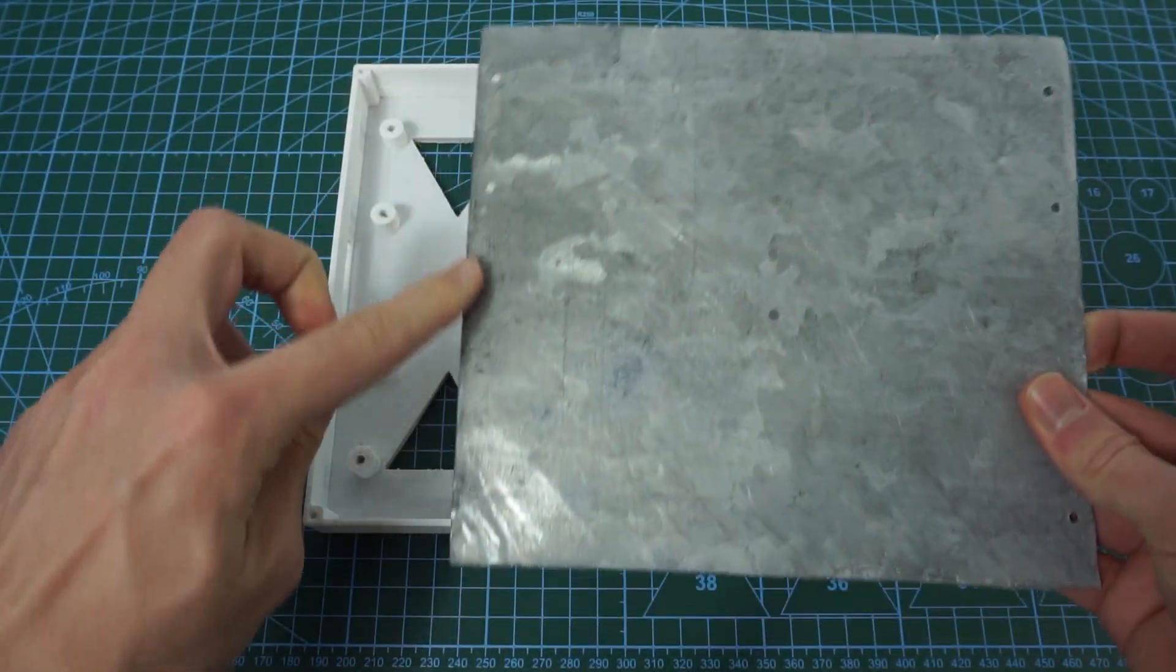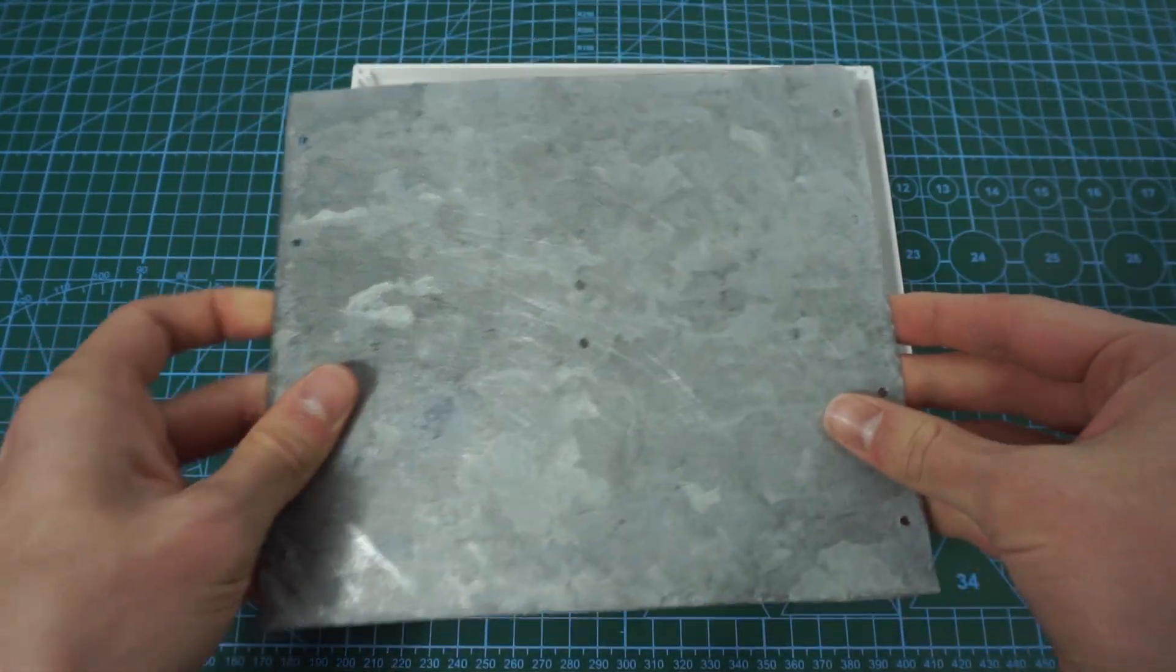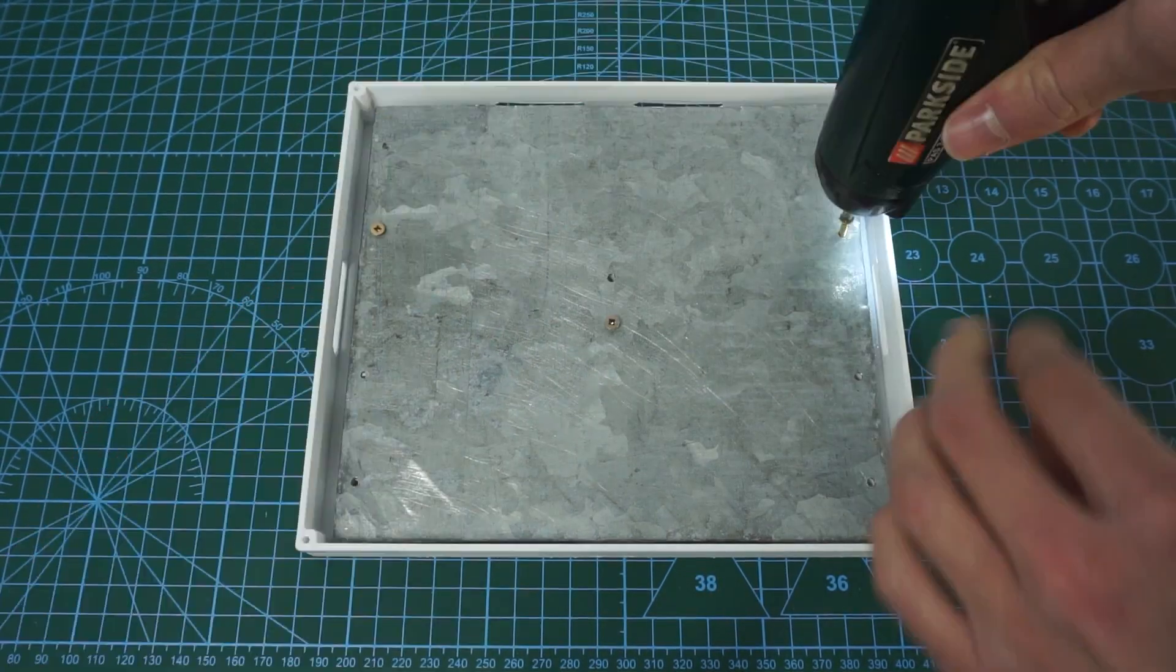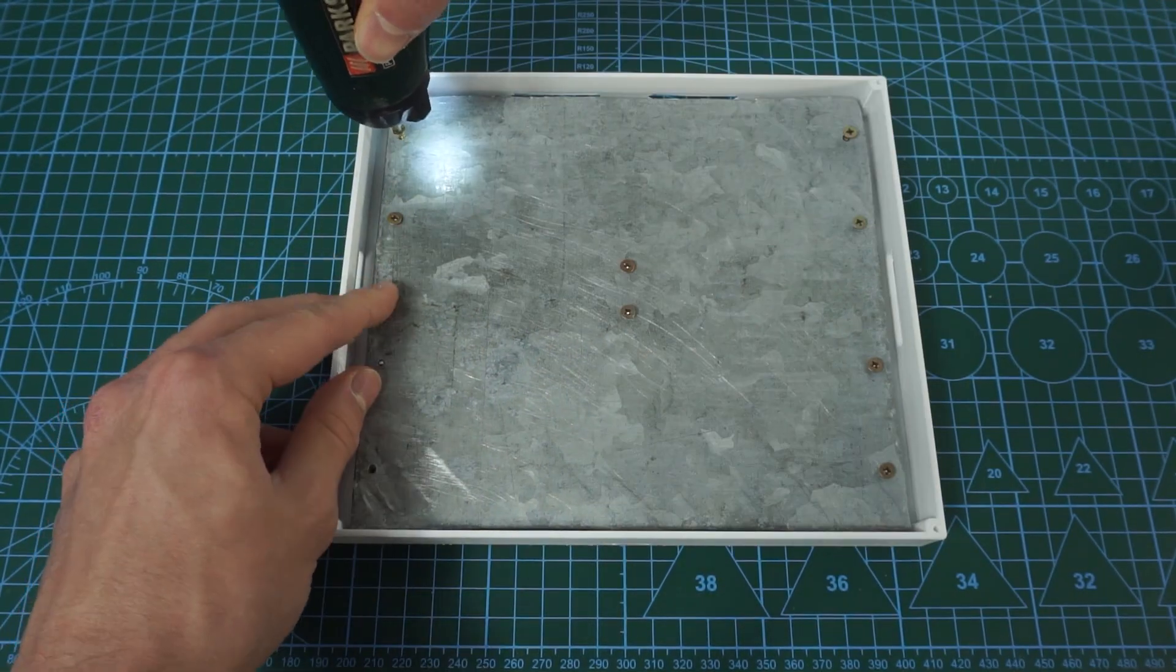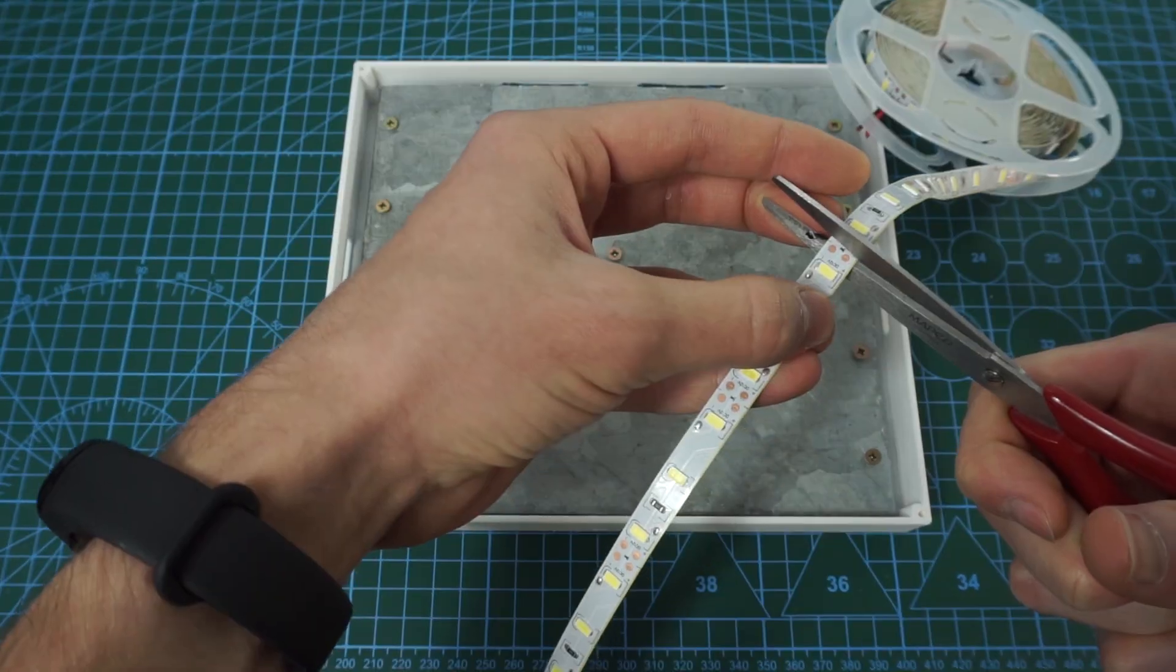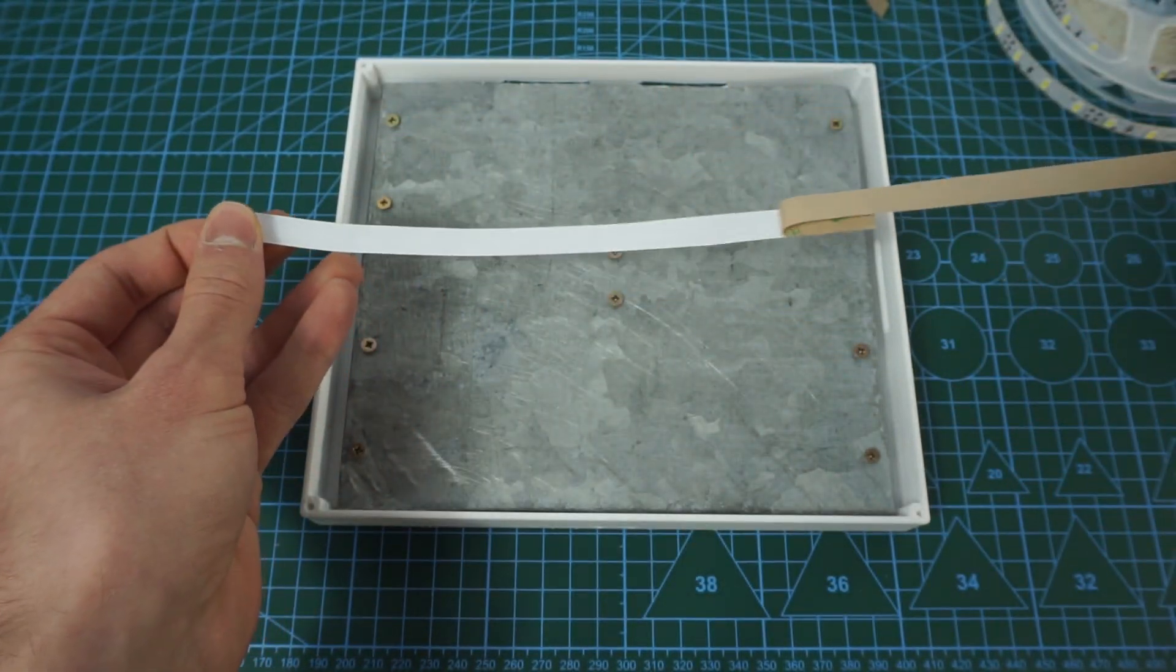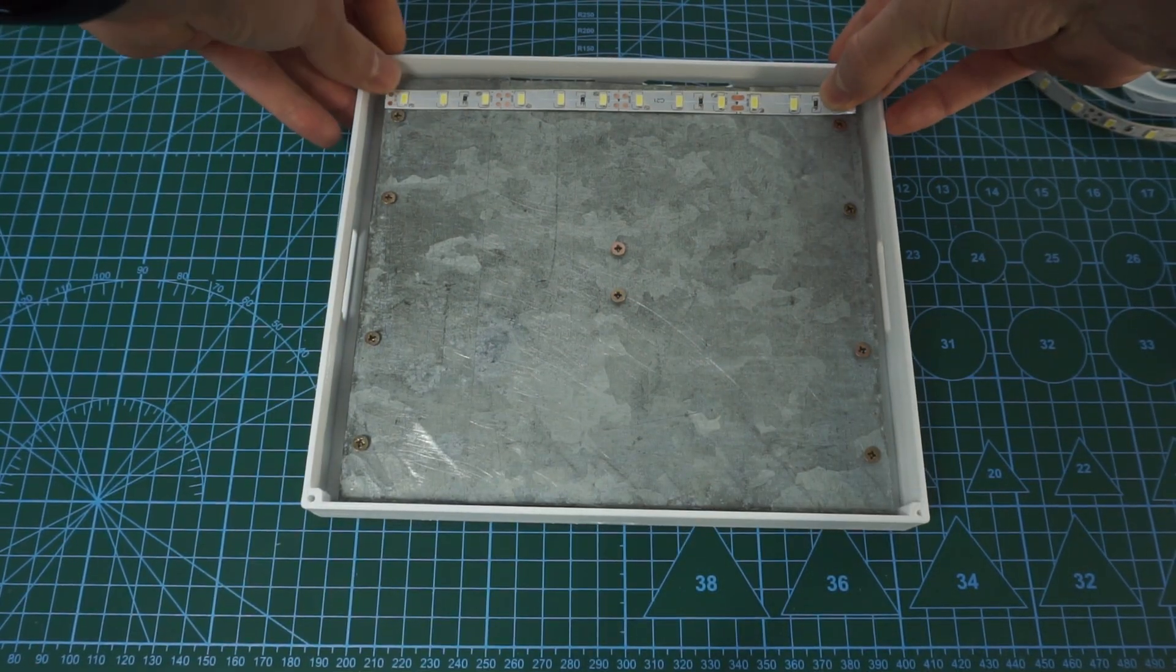Next I drilled some holes in the metal piece so that later I could easily screw it to the housing. After getting that done, I simply cut 9 equal strips, removed the adhesive backing, and stuck them to the metal plate.